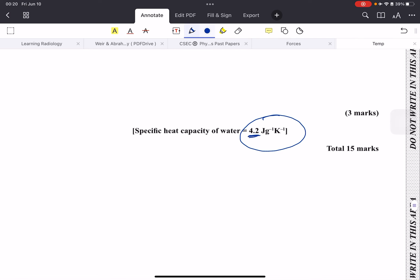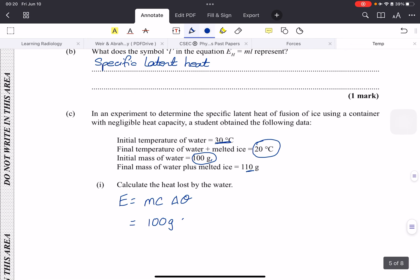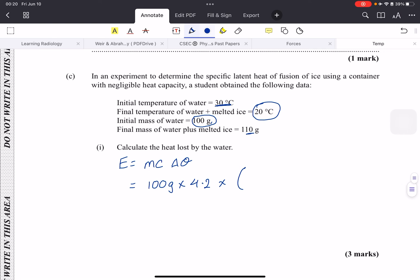They give you this in grams. Look at the information they gave us: specific heat capacity 4.2, not 4200 anymore, because they use grams. 100 by 4.2, and your temperature change will actually be negative now because your final temperature is 20, your initial temperature was 30. So you get 100 by 4.2 by minus 10.